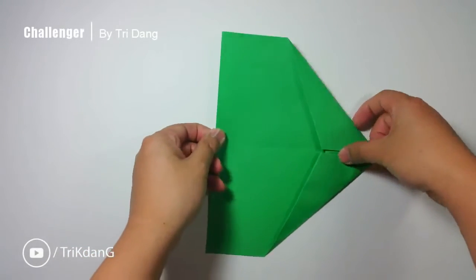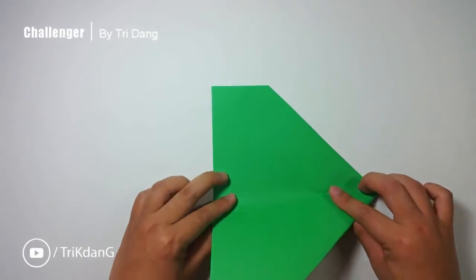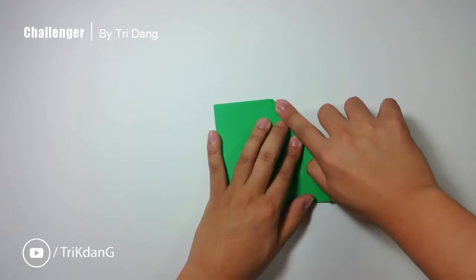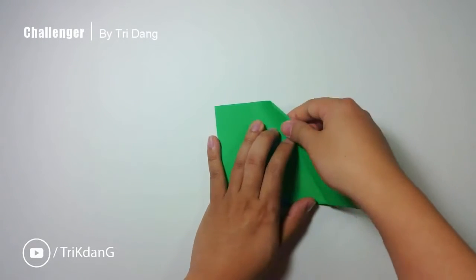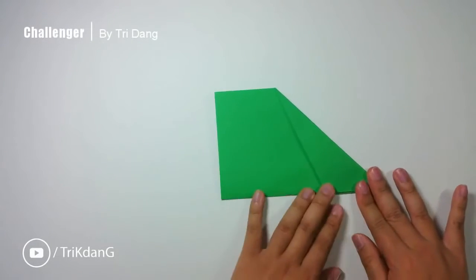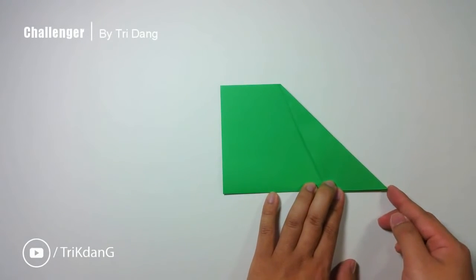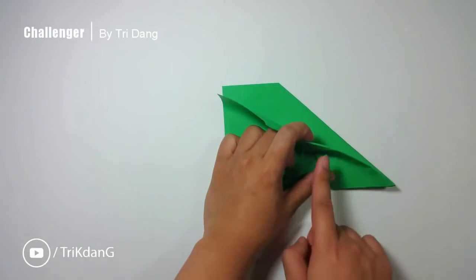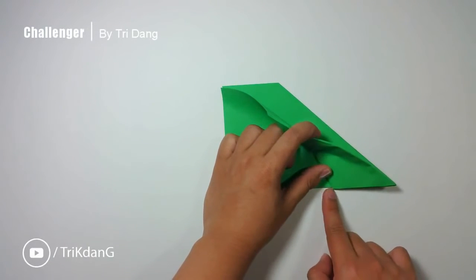Then, turn the paper over, fold it in half. Next, estimate about half an inch from this tip along this edge. And then, match this edge to this corner.